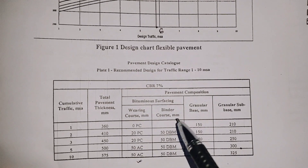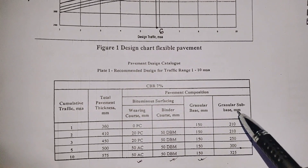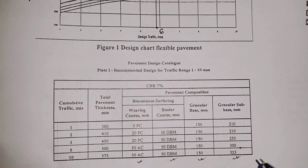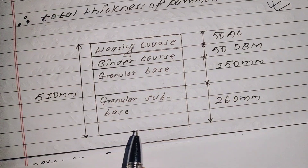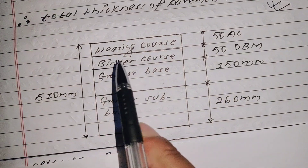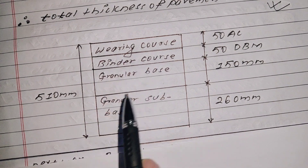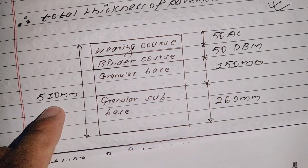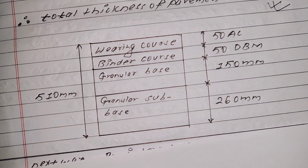The IRC 37-2001 method uses a 4-layer pavement structure: wearing course, binder course, granular base, and granular subbase. Total pavement thickness is 510 mm.